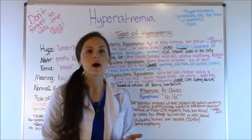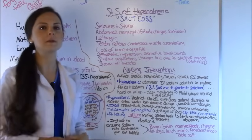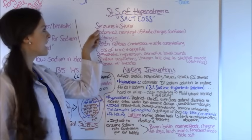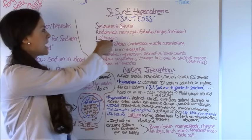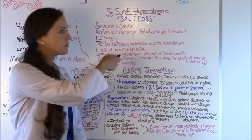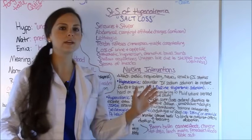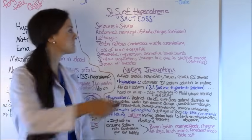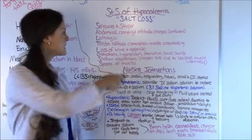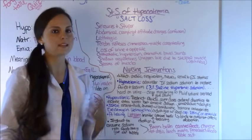Now let's go over the signs and symptoms. To remember the signs and symptoms of hyponatremia, remember the phrase SALT LOSS because here you have low salt. S: seizures and stupor — the patient will probably have these if sodium is really low. A: abdominal cramping or attitude changes, meaning confusion — they may have come in alert and oriented, their sodium level dropped, and now they're confused. L: lethargic — they're going to be tired, not wanting to get up and move, just wanting to sleep. T: tendon reflexes diminished and trouble concentrating — again, that's related to confusion. Remember, salt plays a role in your muscles and nerve conduction.